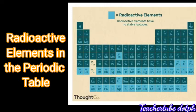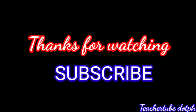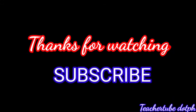That ends our discussion on radioactive decay and the examples of radioactive elements. To summarize, we covered the two sources of Earth's internal heat: primordial heat and radiogenic heat. Thanks for watching! Bye!